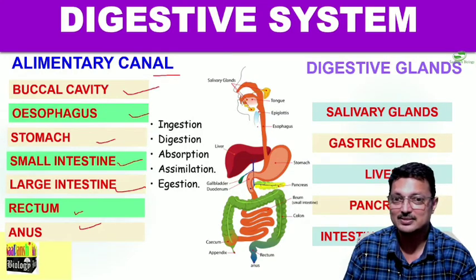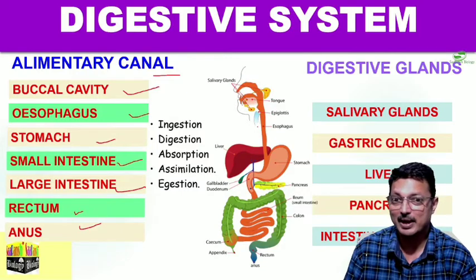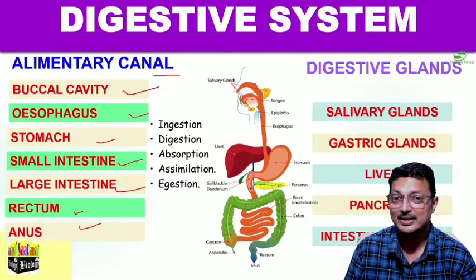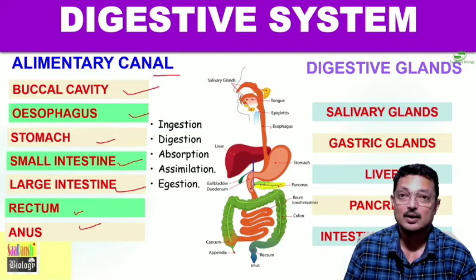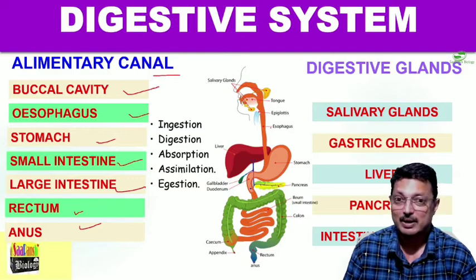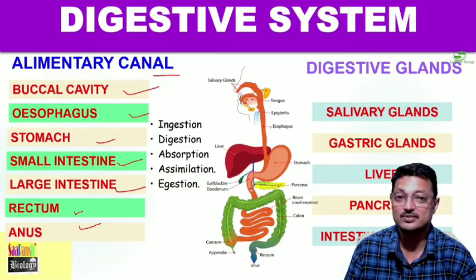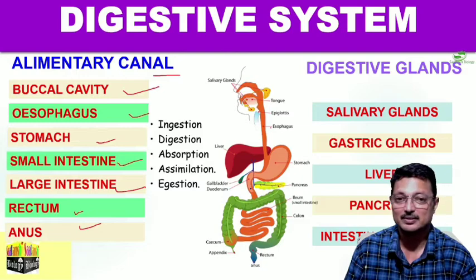Then there is the pancreas - it's a unique gland. Pancreas is called a heterocrine gland, meaning it releases both enzymes and hormones. And then there are intestinal glands. So this is the basic organization of the digestive system in human beings.